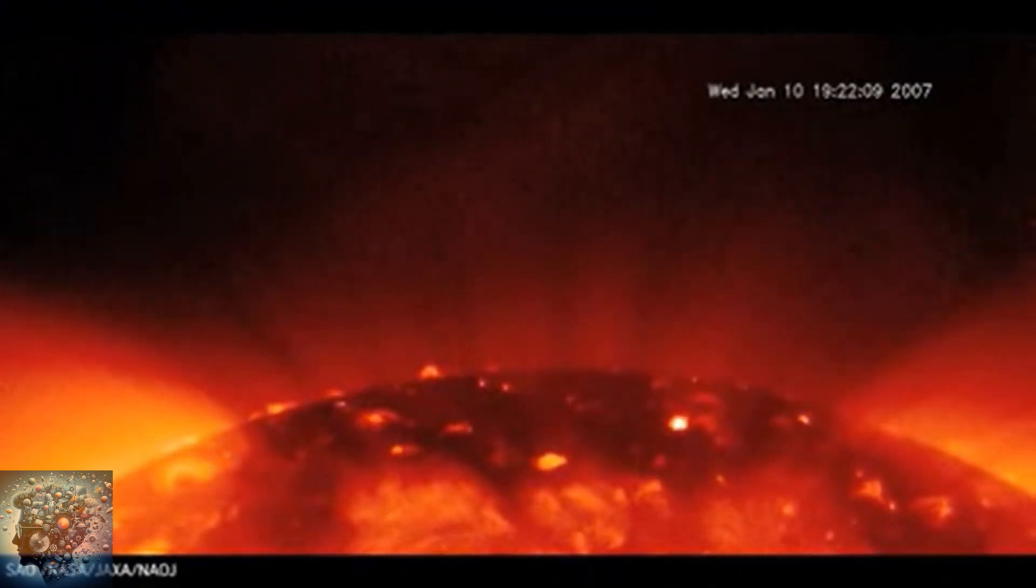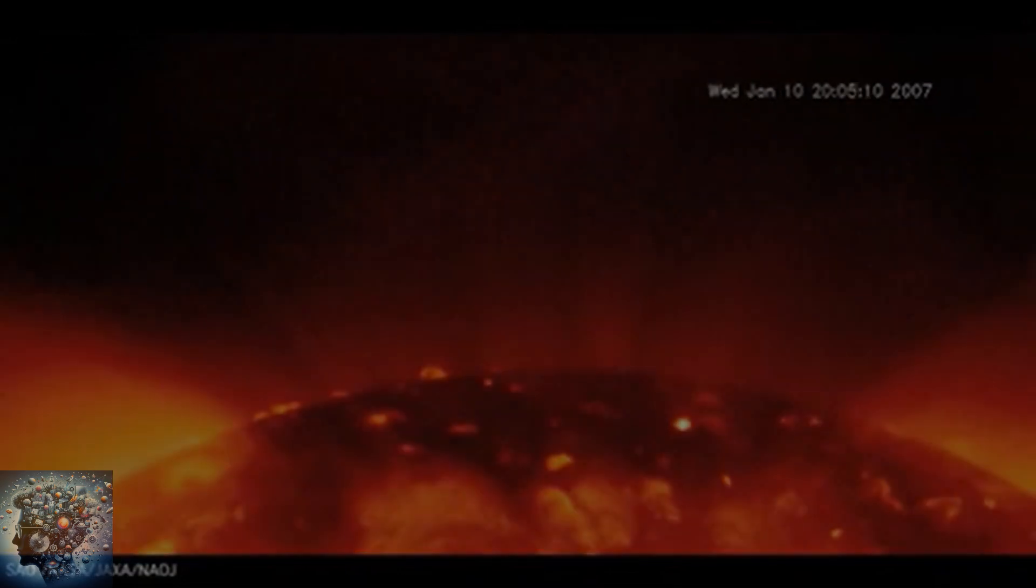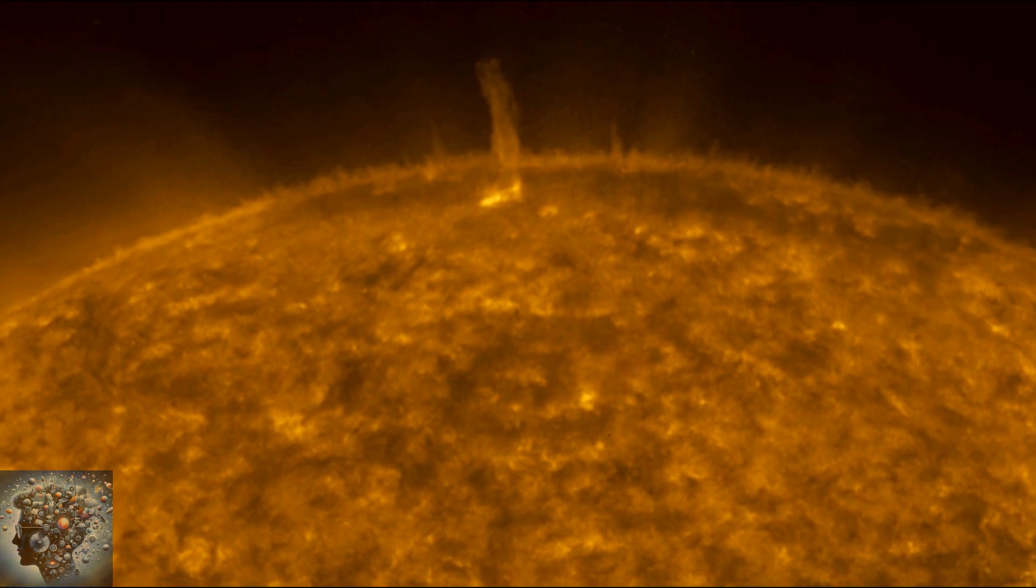He realized that over 11 years the sun went from quiet periods where sunspots were not visible to the maximum phase, where 20 or more groups of sunspots could be seen.